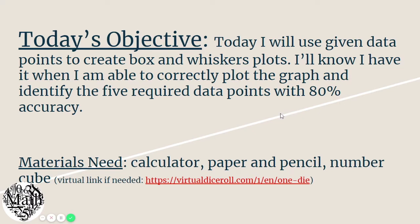Today's objective is the same as yesterday. We're going to still be working on creating box and whisker plots, identifying the five-number summary, and graphing them. You will need a calculator, paper, and pencil, and a number cube.